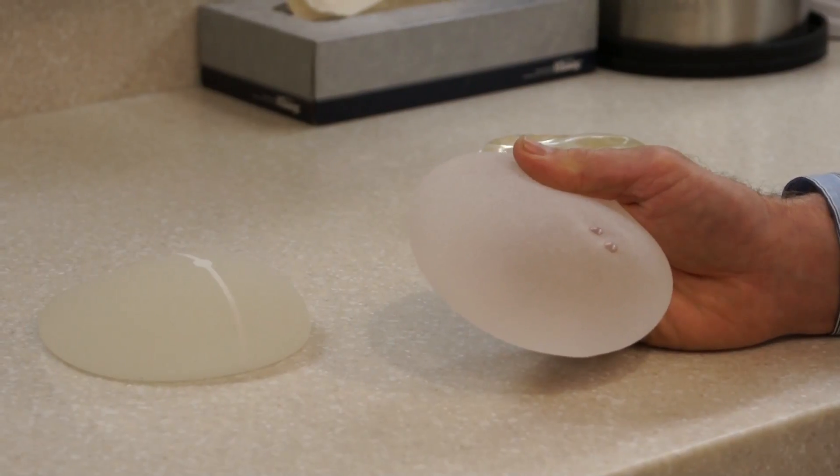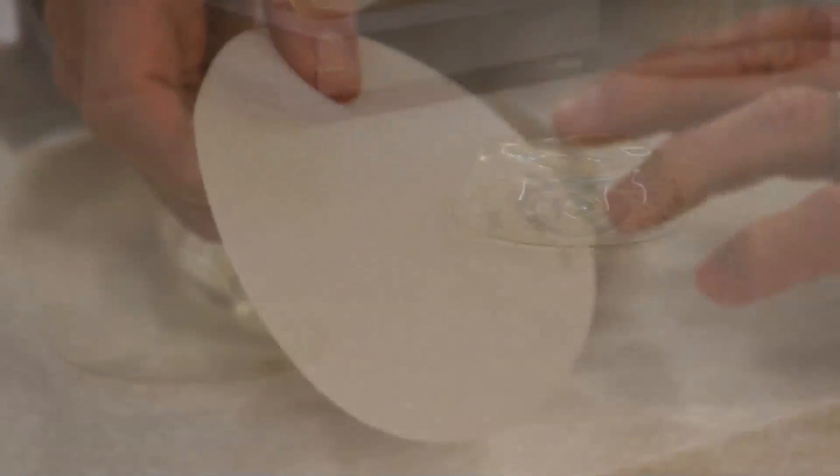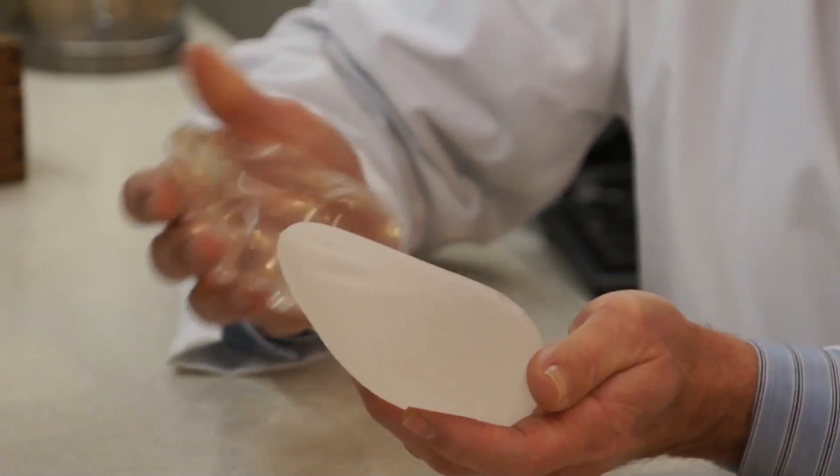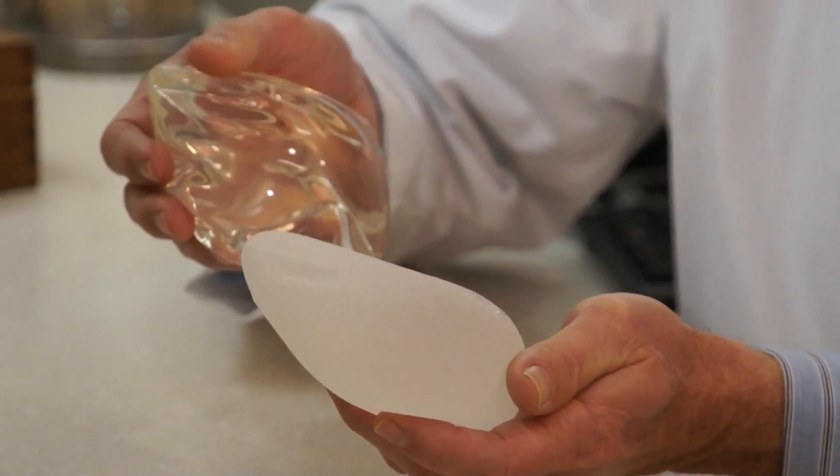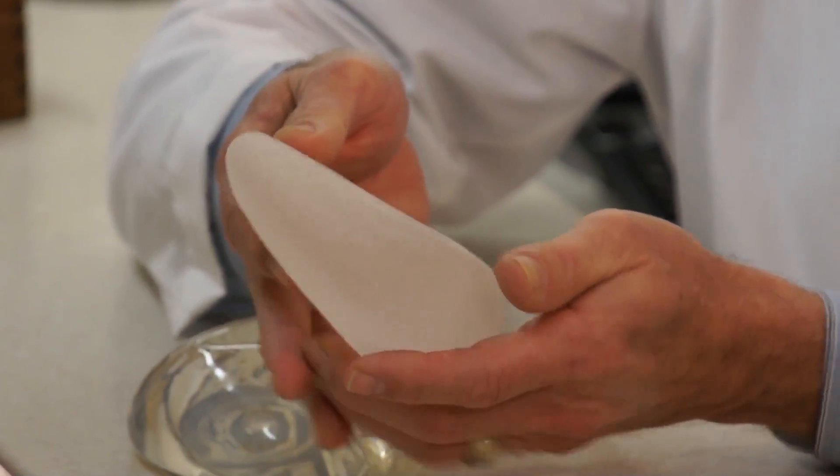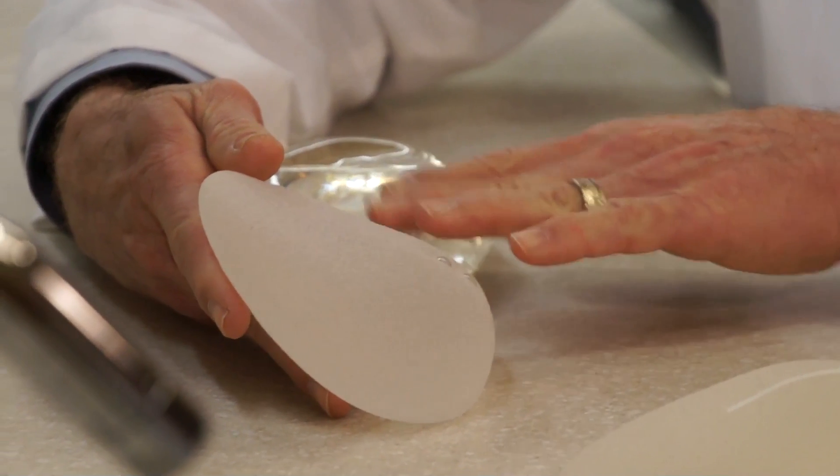This type of implant is the one that was most recently given full approval for both cosmetic as well as reconstructive procedures by the FDA, where you see some irregularities and some rippling that can occur. That can also occur in these but to much lesser degree. The other difference is that this has a textured shell.